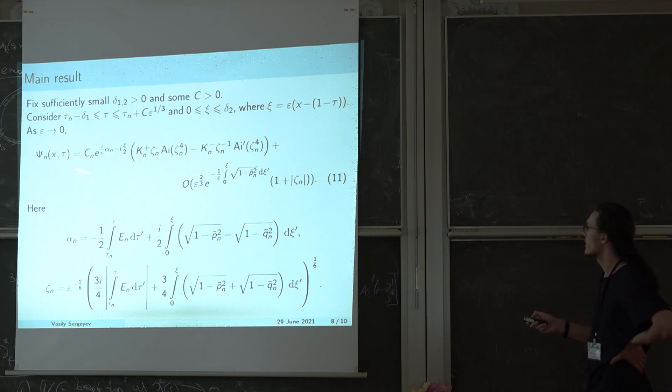So this asymptotic formula contains Airy functions with complex arguments. The argument depends on the small parameter as epsilon to the power of minus one sixth. Let's not dwell too much on this complicated formula.